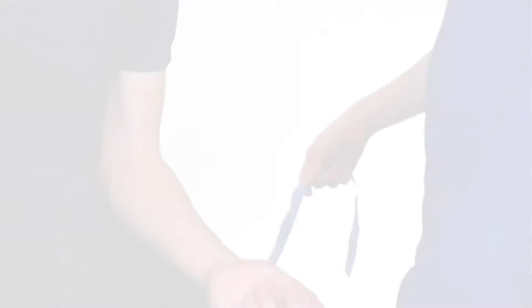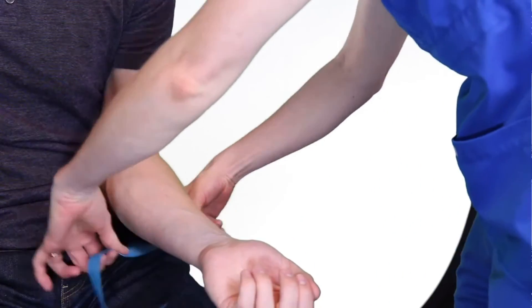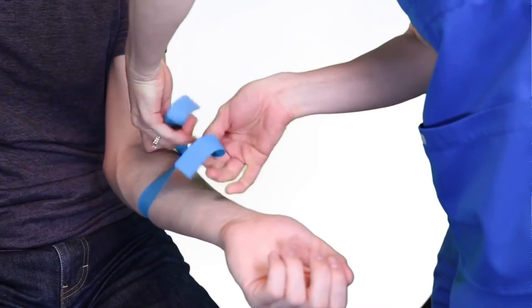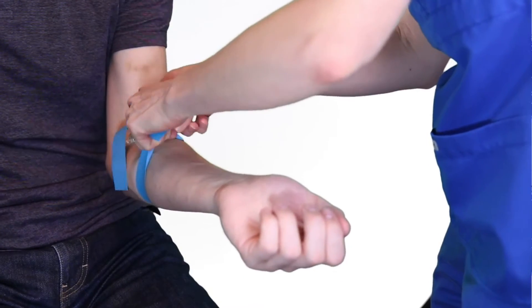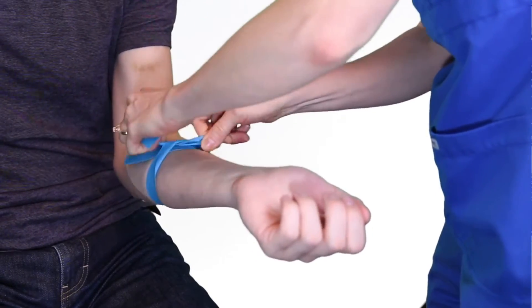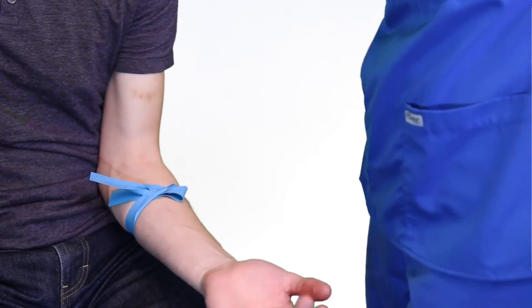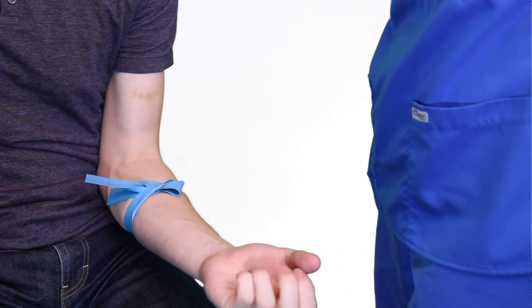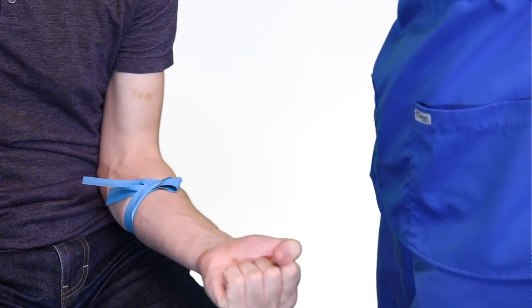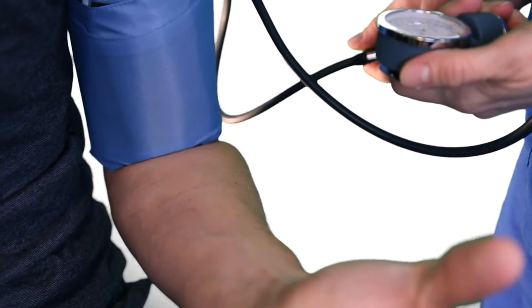Assess the veins with a properly applied tourniquet. A tourniquet that is too loose or too tight does not allow the veins to dilate. Lower the patient's arm below heart level and have them open and close their fist. Alternatively, for a patient with really poor access, a blood pressure cuff can be inflated to a low setting, a few points higher than their diastolic instead of using a tourniquet.